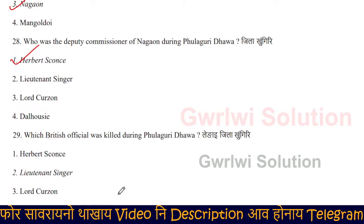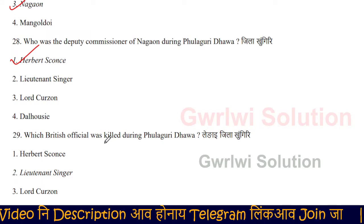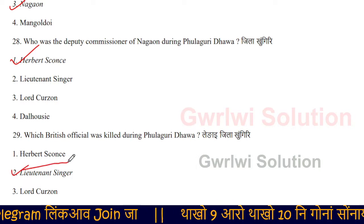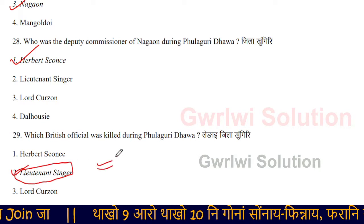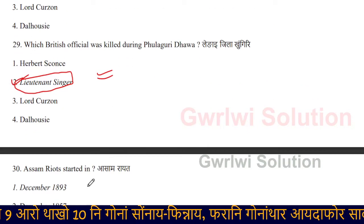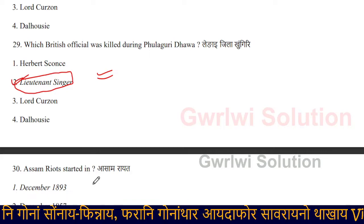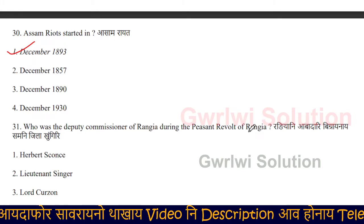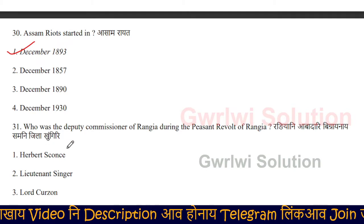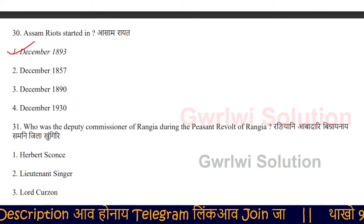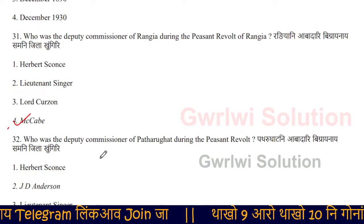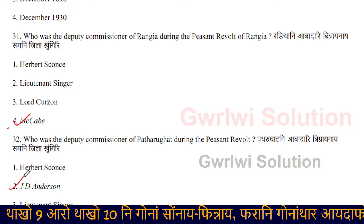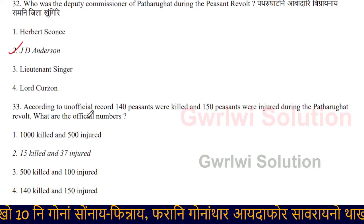Which British official was killed during Pulkuri? The British government banned the Pulkuri. The Majlice campaign ran from December 1893. Who was the deputy commissioner of the palace during the Pizenow revolt? The papal flanker of the Pulkuri was the appointed leader of a veteran M.C. Who was the deputy commissioner of Putruga during the prison rebel? The deputy commissioner was Zeddy Anderson.